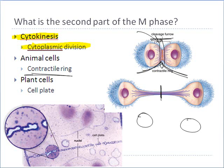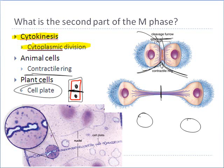Plant cells are a little different because they have a rigid cell wall. If I have a plant cell — where the black represents the cell wall and the red represents the cell membrane, with one nucleus on each side after mitosis — because we can't just pinch the cells apart (the rigid cell wall prevents it), what we have to do is literally build a fresh cell wall between the two cells. That fresh cell wall is called a cell plate.